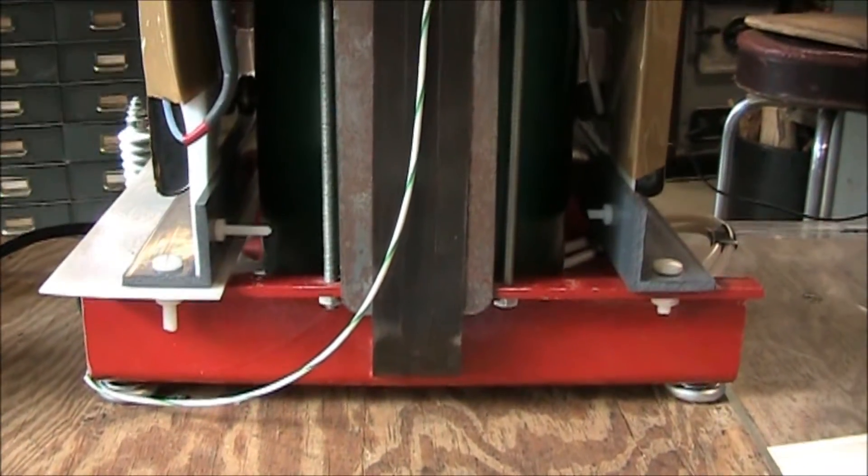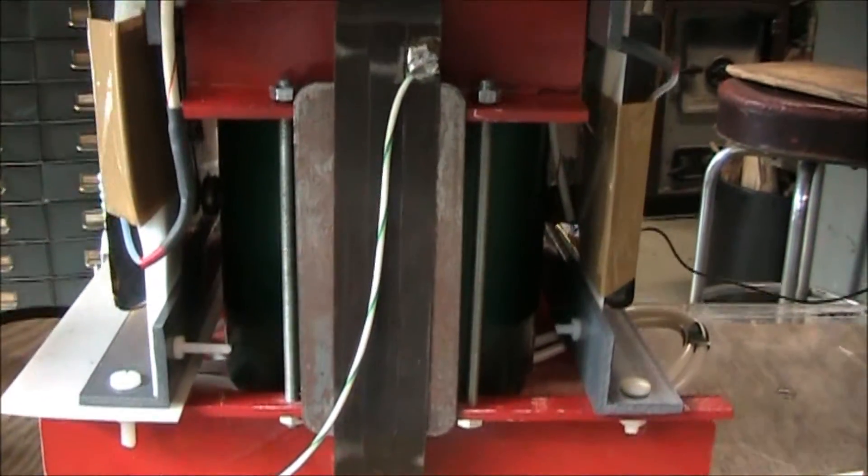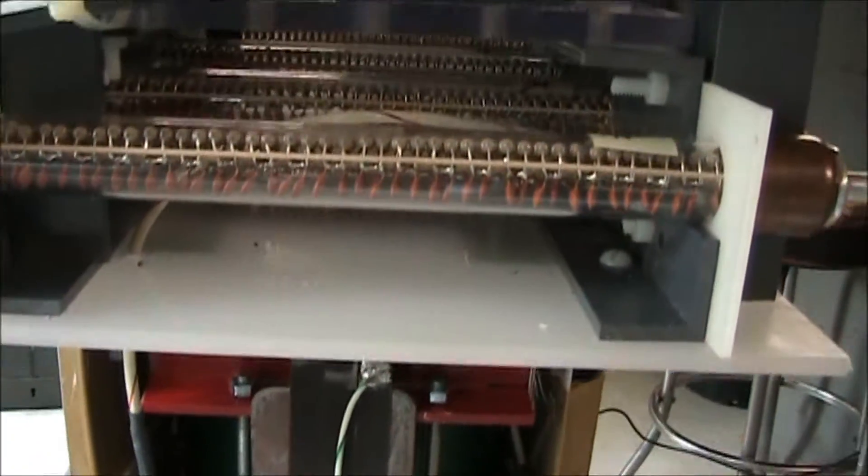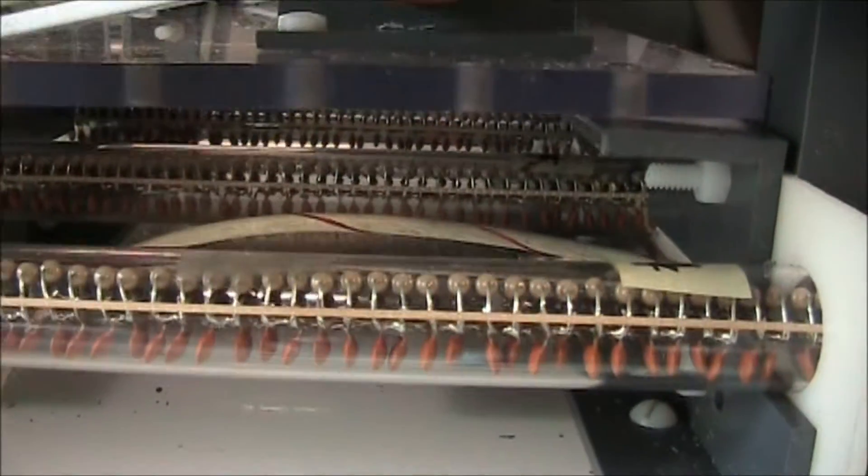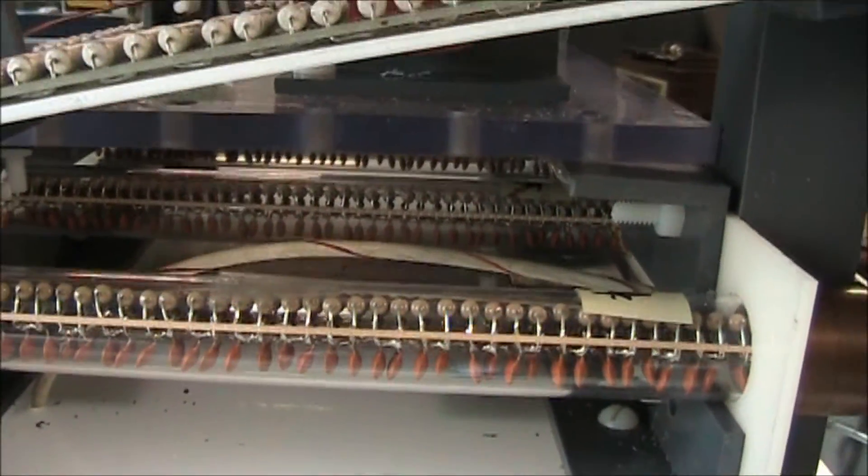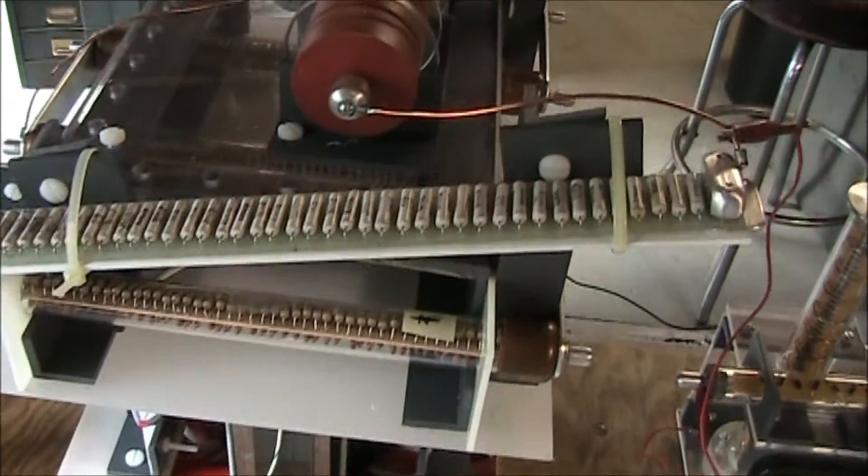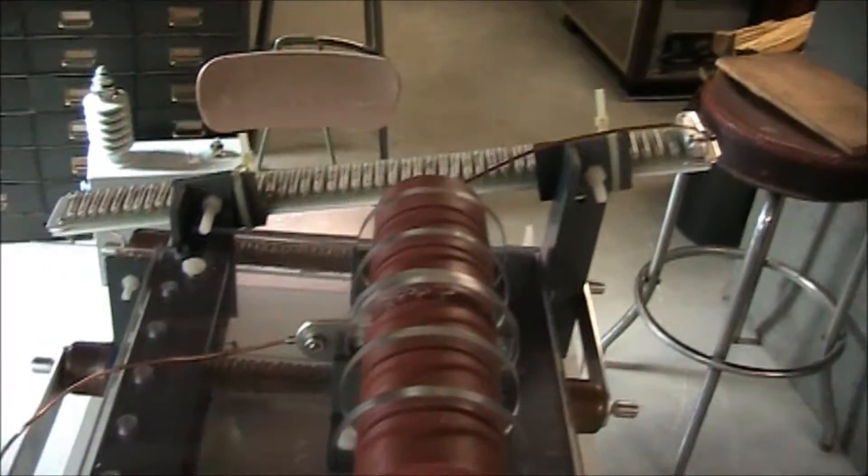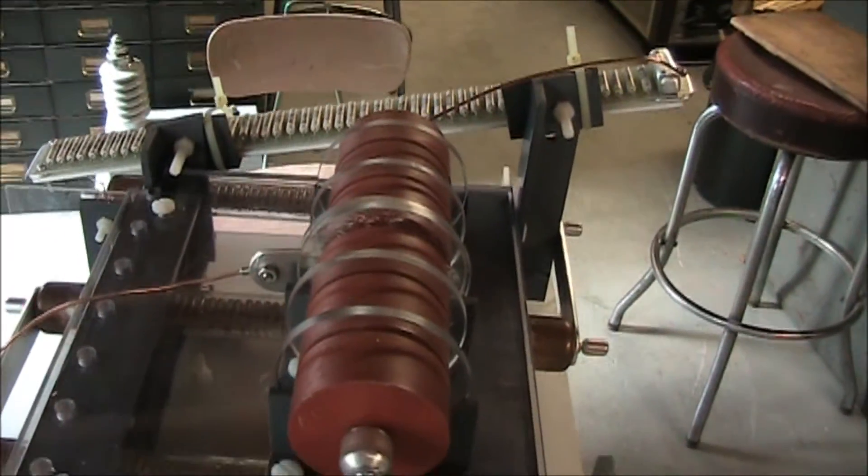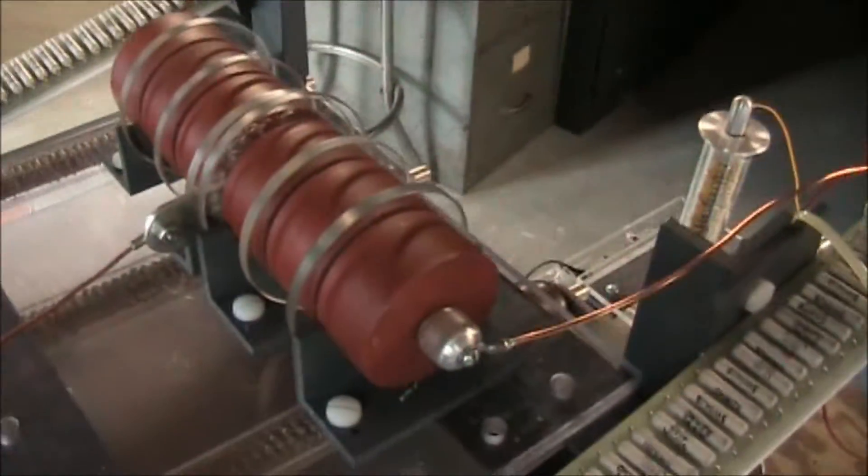So first off here is an overview of the transformer and there are four diodes since it's a quadrupler and I have two current limit resistors on the output since I'm using this as a charging supply for capacitors.